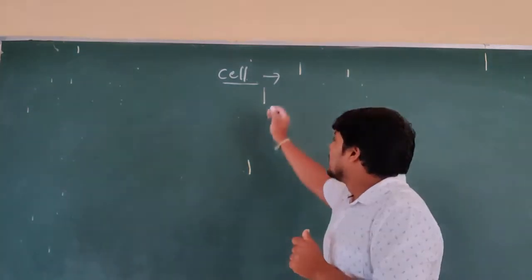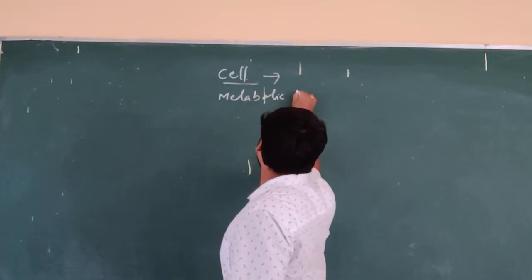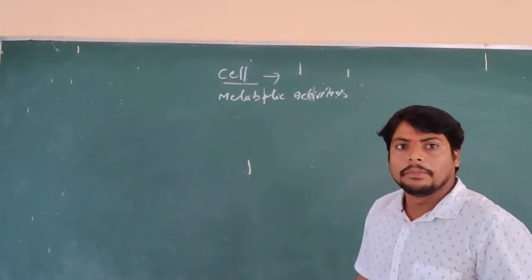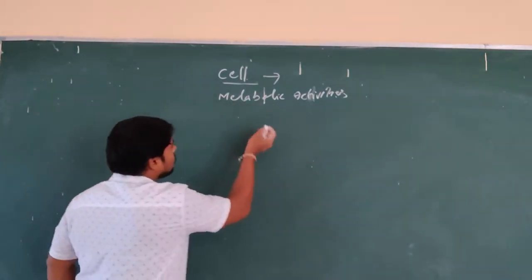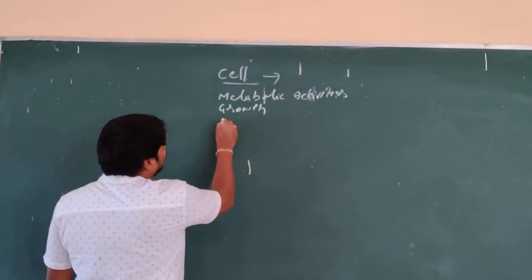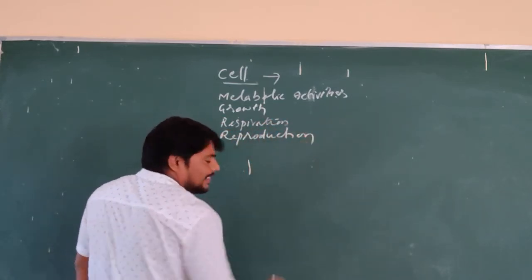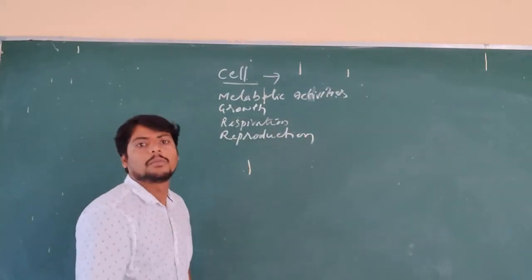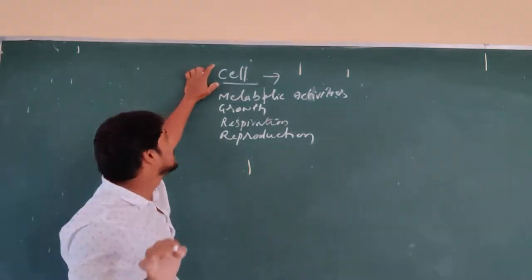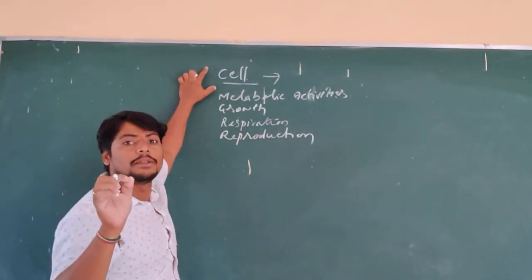If you observe the cell, it is playing a key role in our life processes. The cell is essential to perform some functions like metabolic activities, and also essential for growth. All the life processes going on in our body are carried out by this minute part, and so it is called the functional unit of the body.